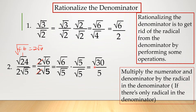For the denominator, square root of 5 times square root of 5 is square root of 25, which equals 5. So the final answer is square root of 30 over 5. Take note: you cannot divide 30 by 5 inside the radical sign because the 5 in the denominator has no radical sign.